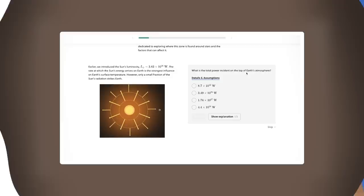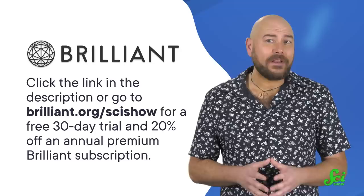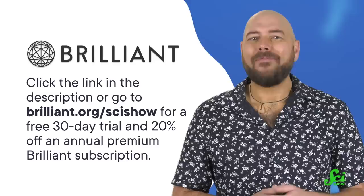After all, there's over 100 billion galaxies like ours out there, so there's probably a thing or two to learn about them. You can get started at Brilliant.org slash SciShow or in the link in the description below. And you get a free 30-day trial and 20% off an annual premium Brilliant subscription by using that link. Thanks for watching this SciShow video, and thanks to Brilliant for supporting it.